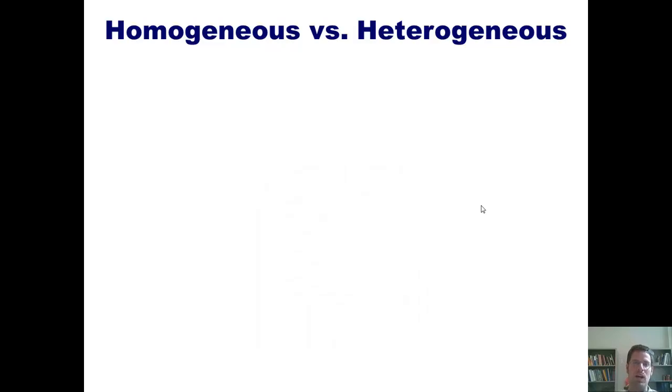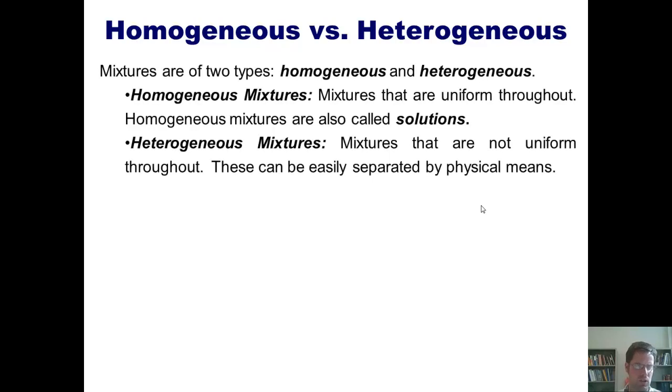Mixtures can be one of two types, either homogeneous or heterogeneous. Homogeneous mixtures are mixtures that are uniform throughout. In other words, the various things in them have all been uniformly dispersed or spread out perfectly evenly. Homogeneous mixtures are also sometimes called solutions. Now, heterogeneous mixtures are mixtures that are not uniform throughout. So the individual things in them are not evenly spread out or evenly dispersed throughout the mixture. Heterogeneous mixtures can be easily separated, or the components of heterogeneous mixtures can often be easily separated by physical means.